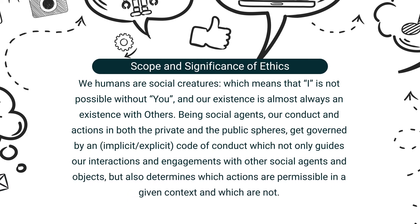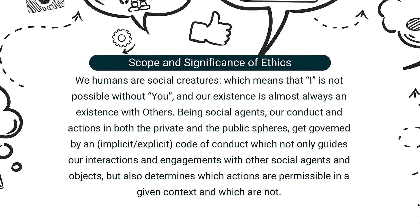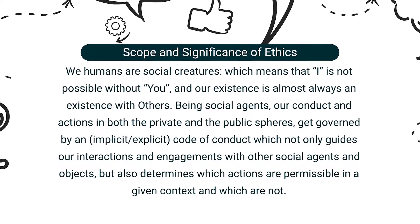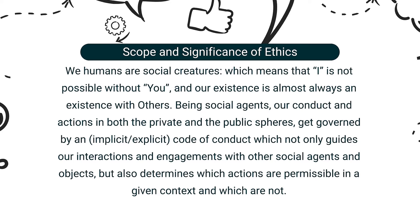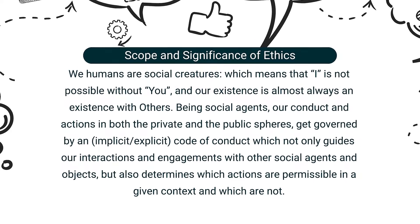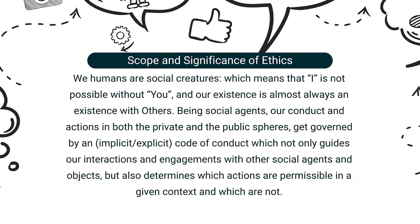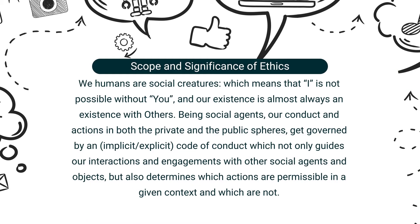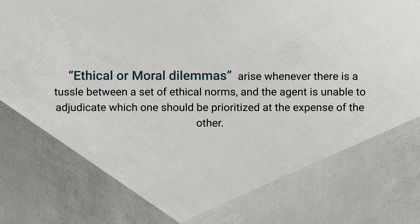Regarding the scope and significance of ethics: ethics is one of the inseparable components of the discipline of philosophy, and ethics is also found in every aspect of life. We humans are social creatures, which means that 'I' is not possible without 'you.' Our existence is almost always an existence with others. Being social agents, our conduct and action in both private and public spheres are governed by an implicit or explicit code of conduct, which guides our interactions and engagements with other social agents and objects, and also determines which actions are permissible in a given context and which are not.